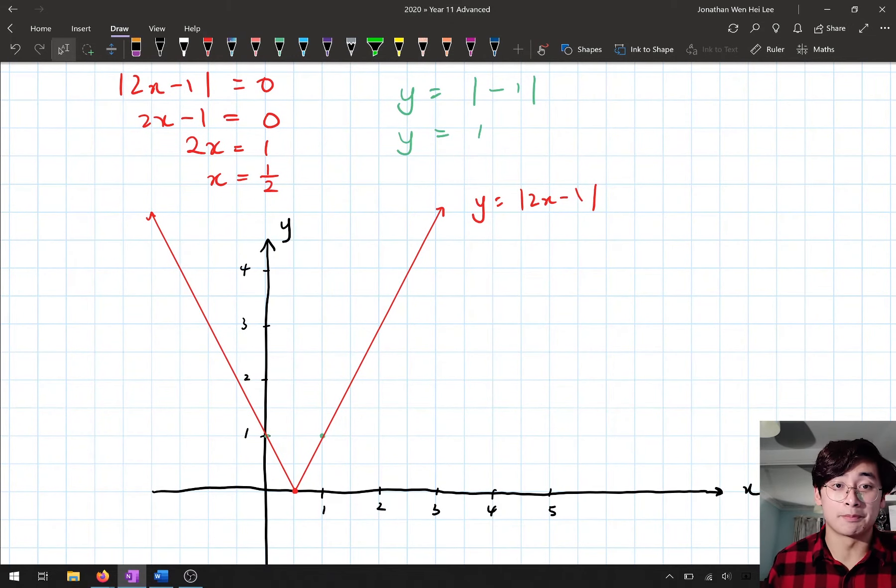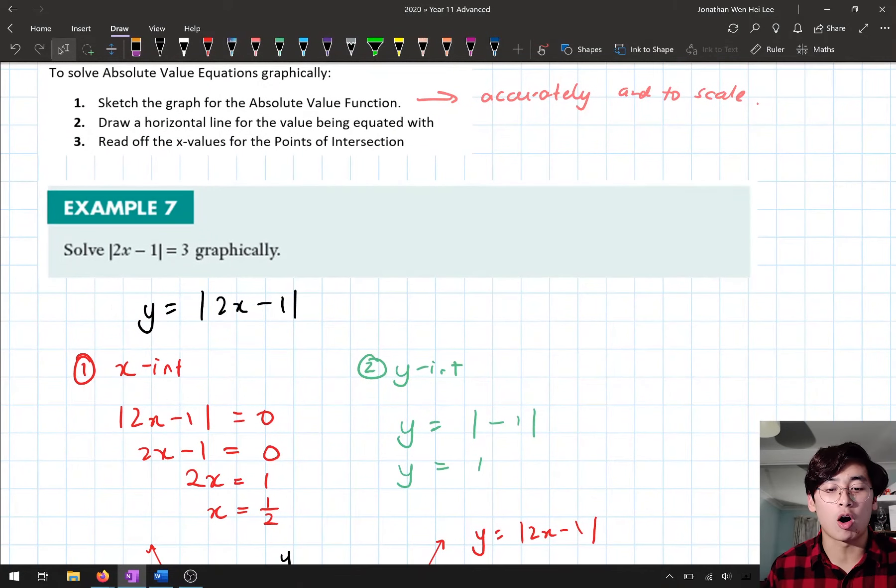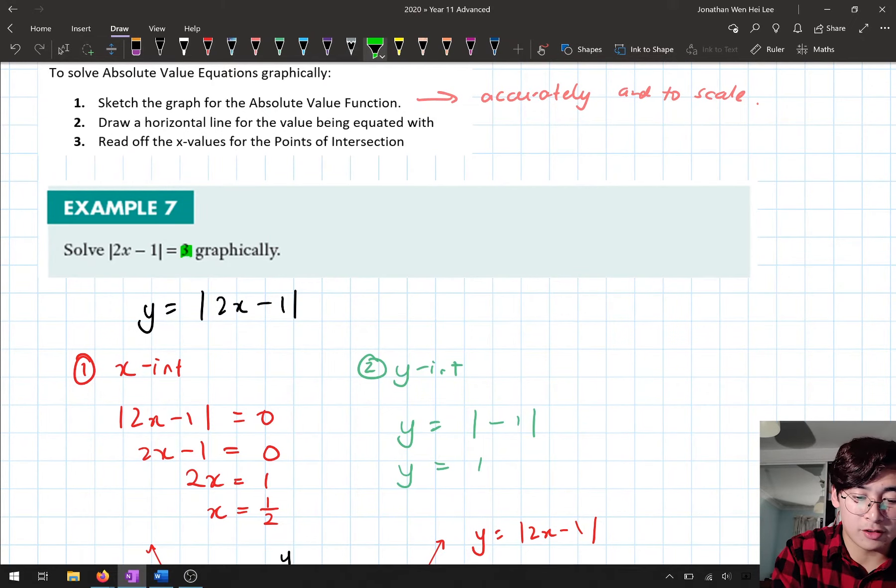We've drawn that. That's step one. Now the second step that I wrote down was that we want to draw a horizontal line for the value being equated with. The value that we're equating it with is just equal to 3.